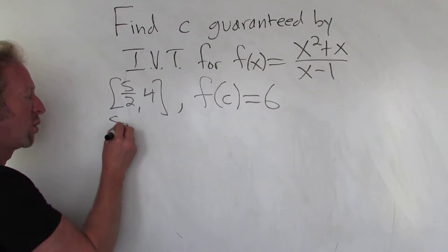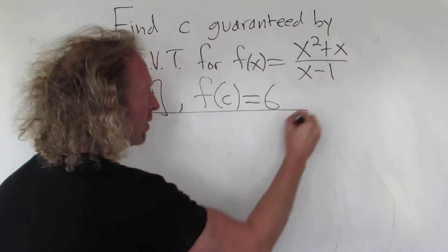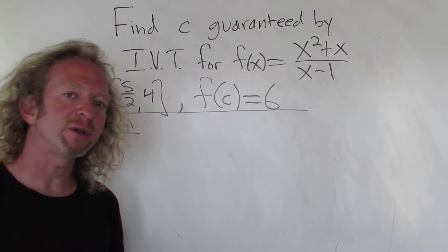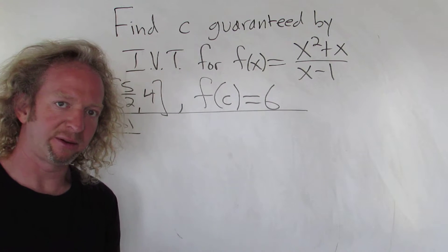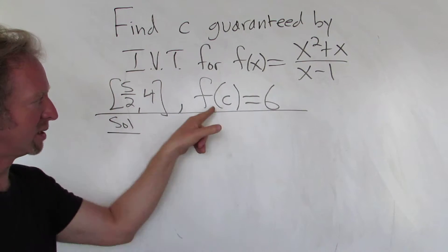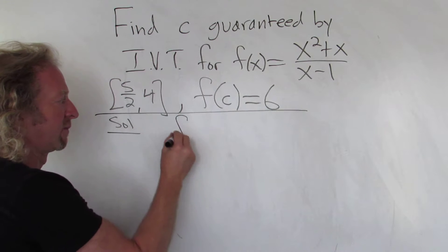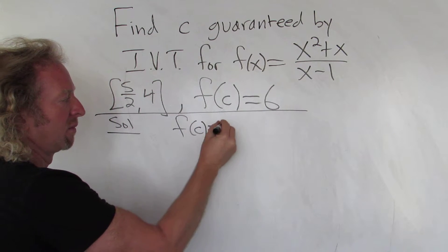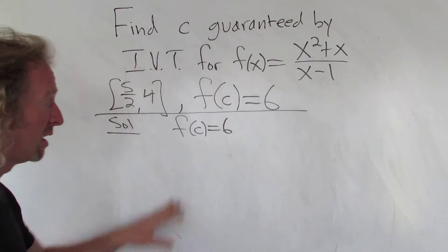So solution, SOL means solution. All we have to do is find the value of C guaranteed by the mean value theorem. So to do that, all we do is write this down. F of C equals 6. All we have to do. Now we just got to find C.